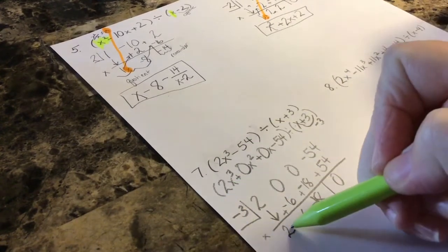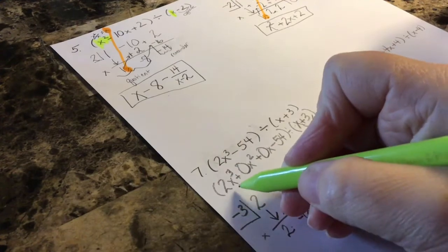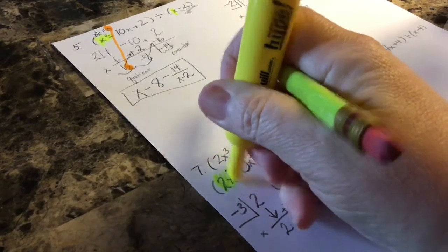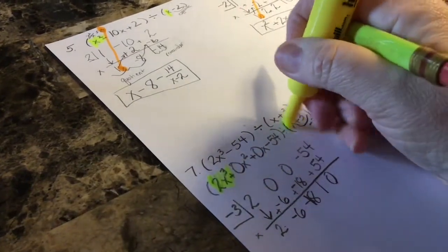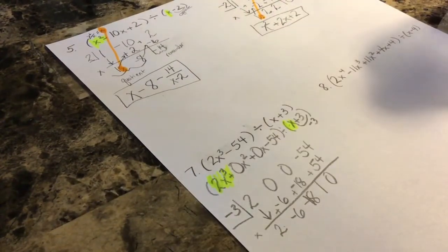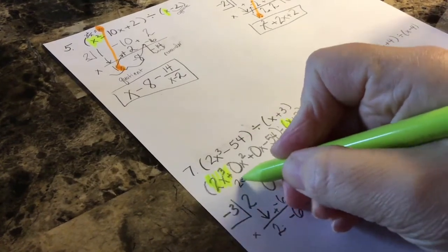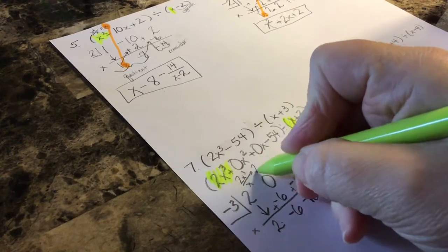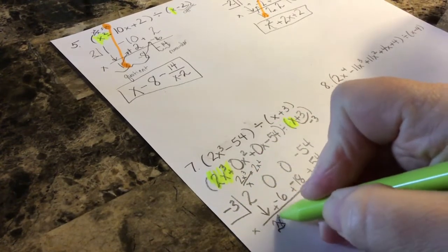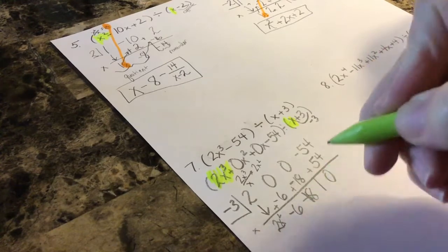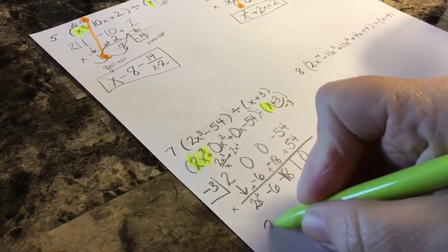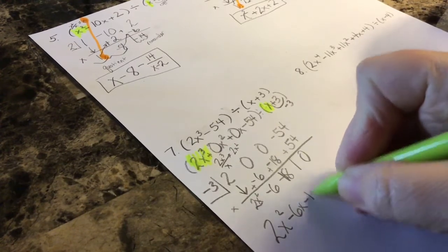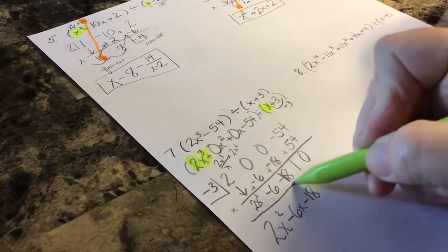So now let's think about what my coefficient is going to be here. Remember, you're dividing first term by first term. Even when I use that coefficient, 2x cubed divided by x is 2x squared. So x squared goes here. x to the second, x to the first, no x. So my quotient is 2x squared minus 6x minus 18.